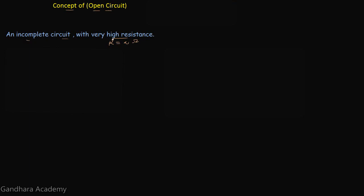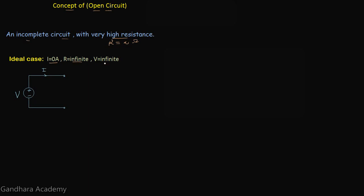We also have two cases for the open circuit. The first one is the ideal case. For the ideal case, the current through the open circuit is zero amperes, the resistance across the open circuit is infinite, and the voltage across an ideal open circuit is also infinite volts.